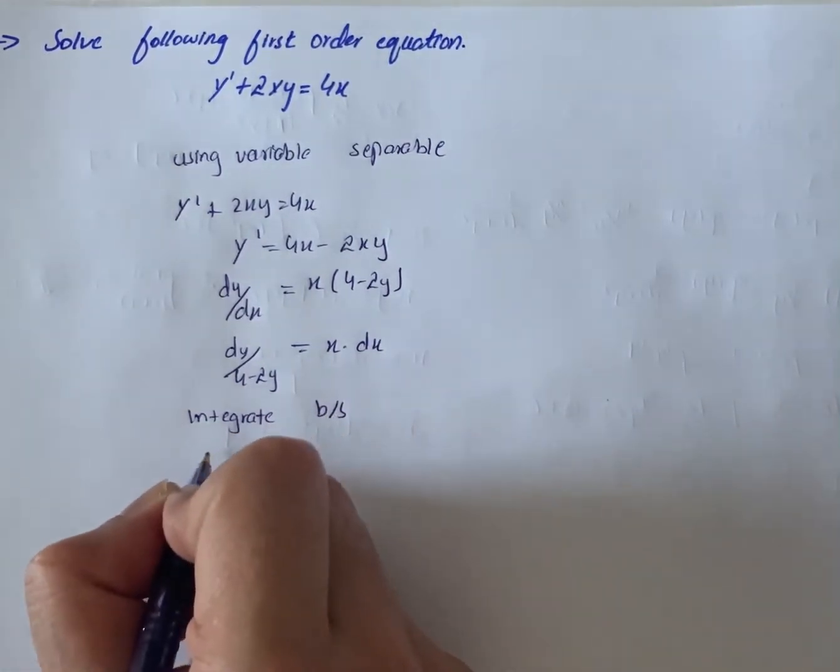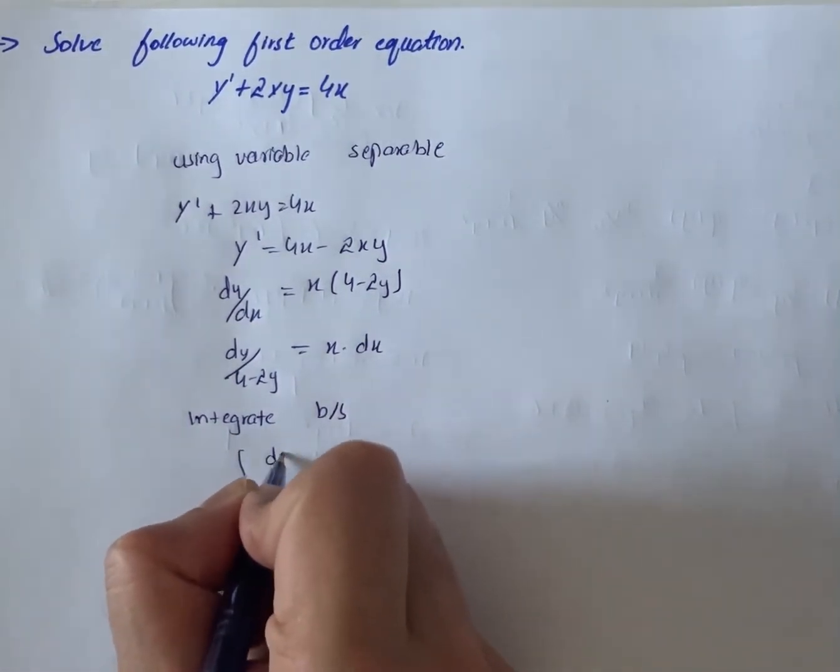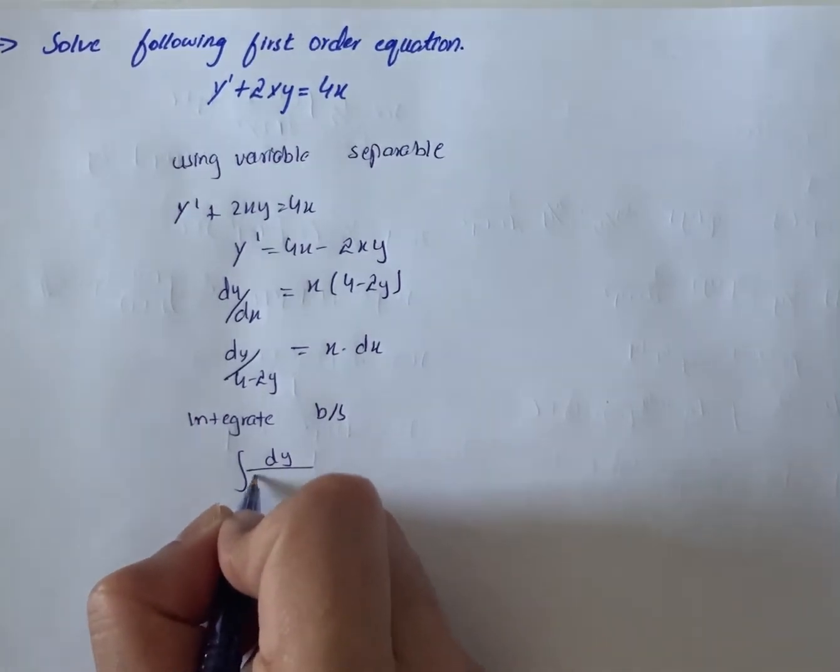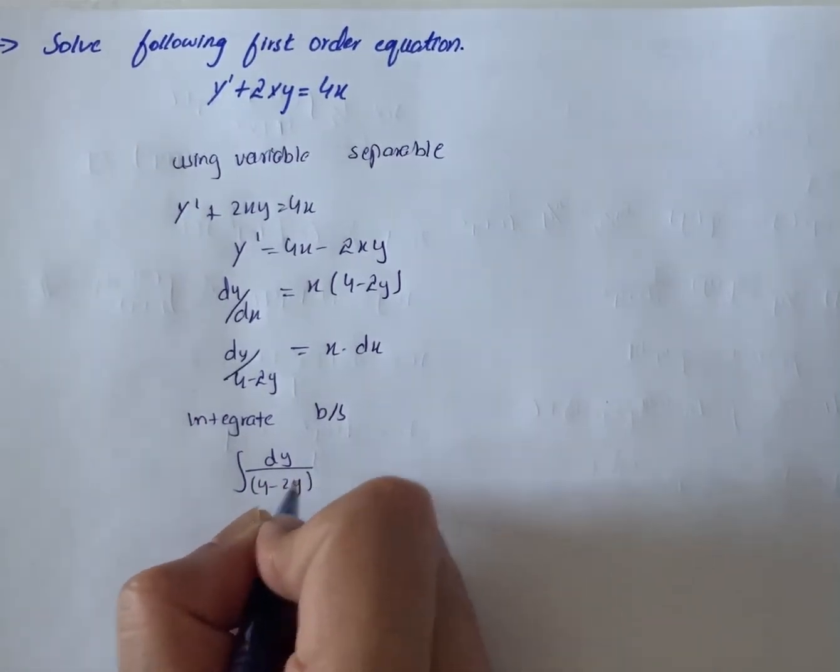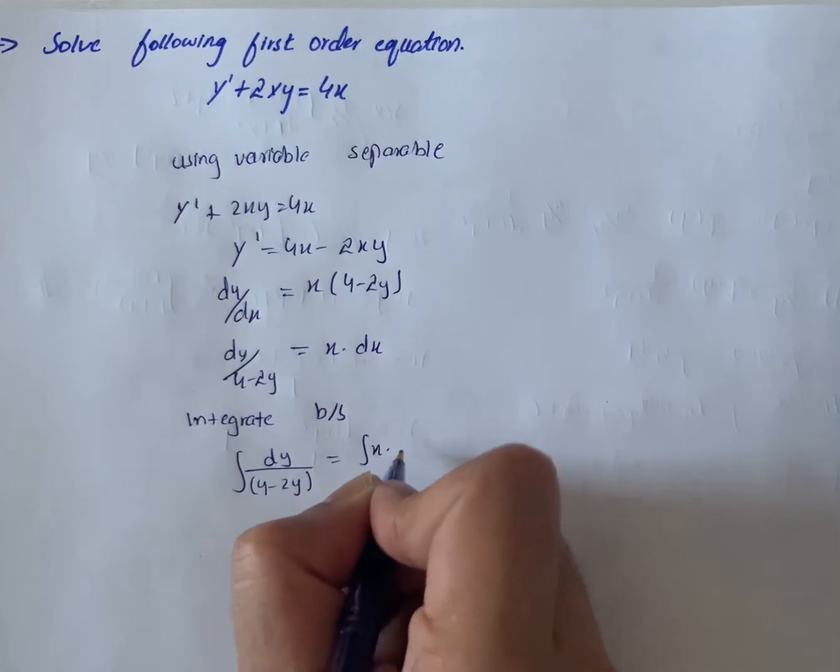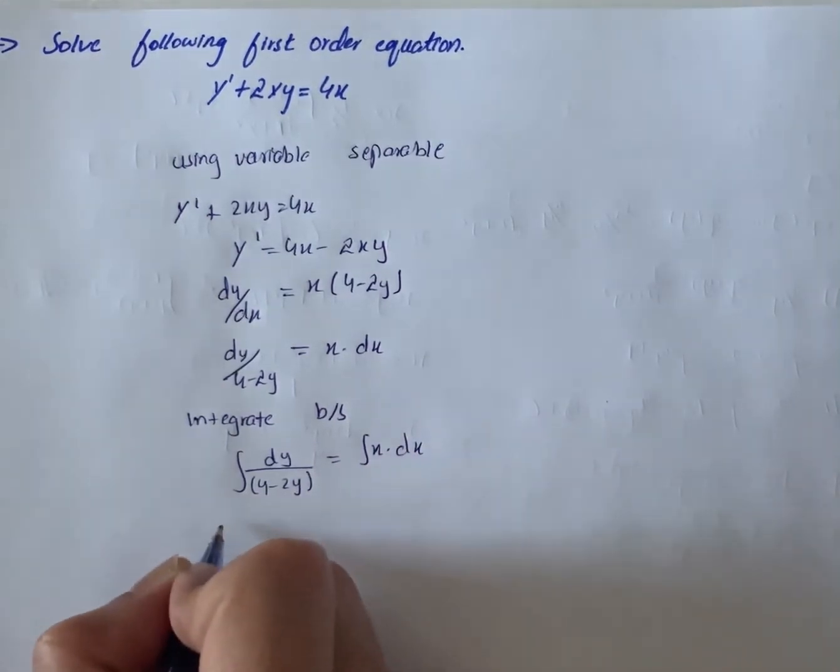Integrating both sides, we get ∫dy/(4 - 2y) = ∫x dx.